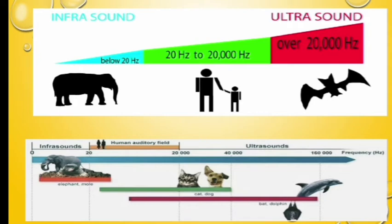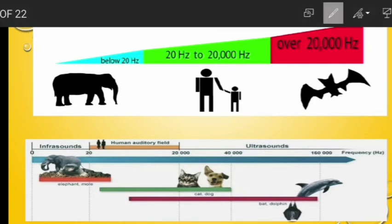In the diagram below, you can also see that the human auditory field is between 20 hertz and 20,000 hertz. Infrasound is less than 20 hertz, ultrasound is above 20,000 hertz, and frequencies around 20,000 hertz can be heard by cats and dogs, while frequencies above that can be heard by bats and dolphins.